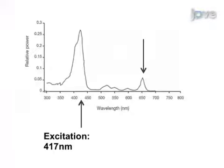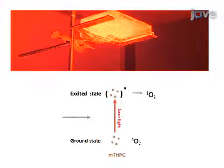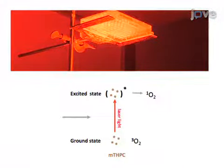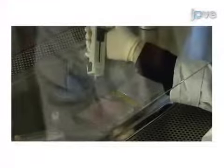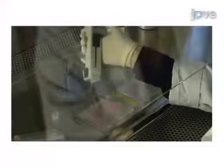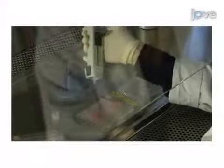In the second step, laser light is applied to the cells to activate the MTHPC and to produce cytotoxic oxygen radicals. Finally, cell metabolism and cell number are measured by a water-soluble tetrazoleum-1, or WST1, assay.